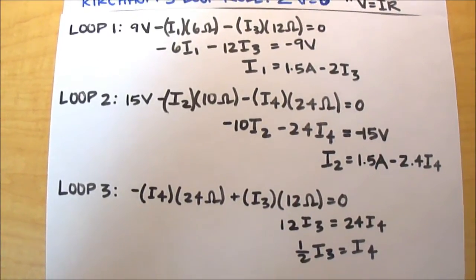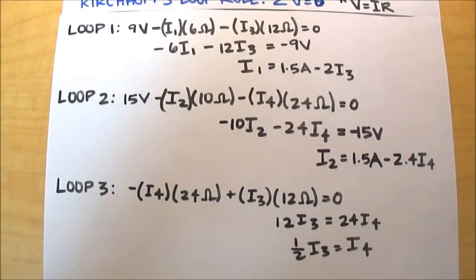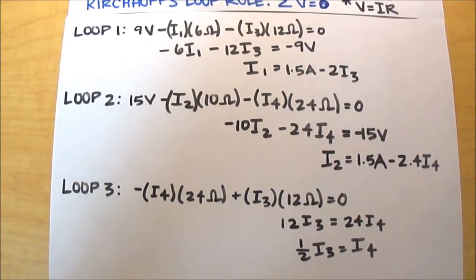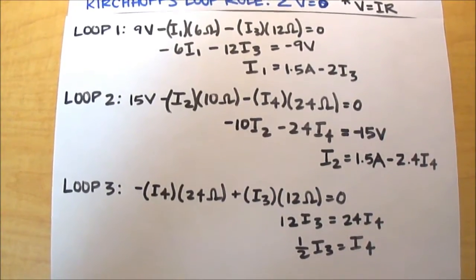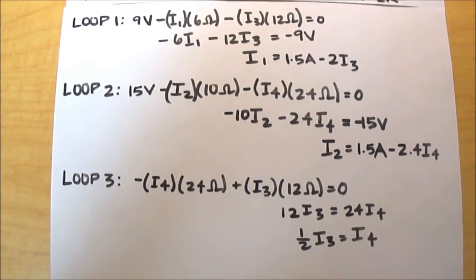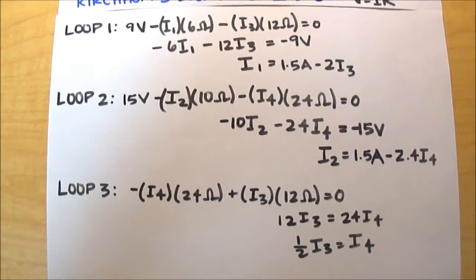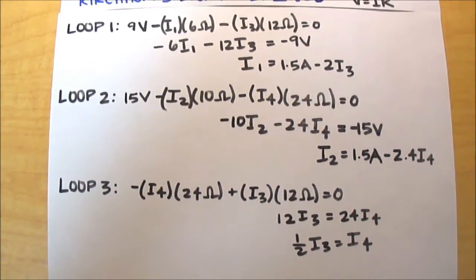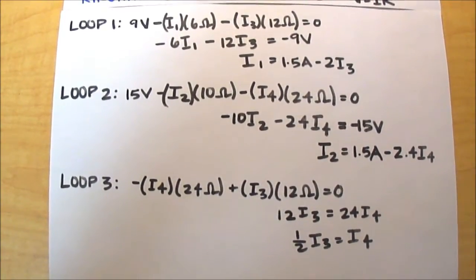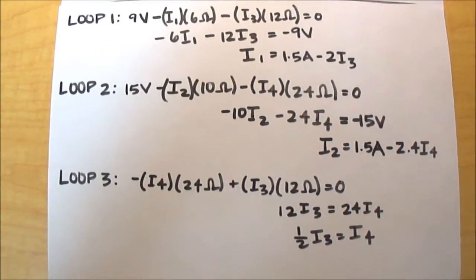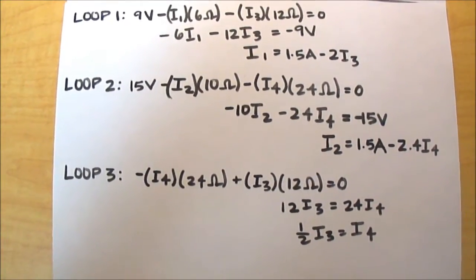Loop 2 and loop 3 will be done similarly to loop 1. You just have to remember that when it comes to the batteries, if you're traveling from the negative end to the positive end, then your voltage will be positive. And if you're traveling from the positive end to the negative end, then your voltage will be negative. You should also remember that when you're using V equals I times R, if your loop is in the direction of the current, then your voltage for said number is going to be negative. If it is against the current, then your number will be positive.